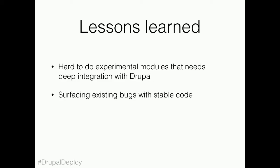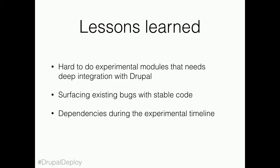Surfacing existing bugs with stable code — what's stable and experimental and the timelines when it comes to the experimental governance process — there's still some discussion we can have there. Also, introducing new dependencies during the experimental timeline for a module is posing some challenges. We introduced the workflow module in 8.3. The generic governance model says you have one year to make it stable. But because it's now a dependency of content moderation, we've only got six months to make it stable, because content moderation needs to be stable within its one-year cycle.